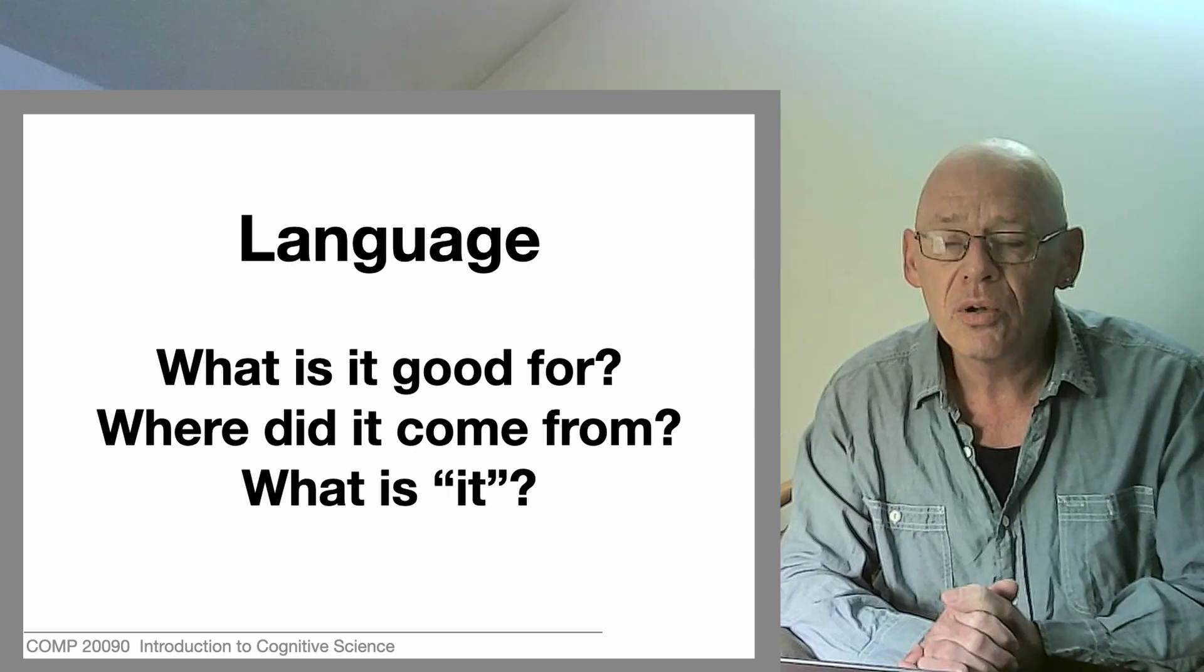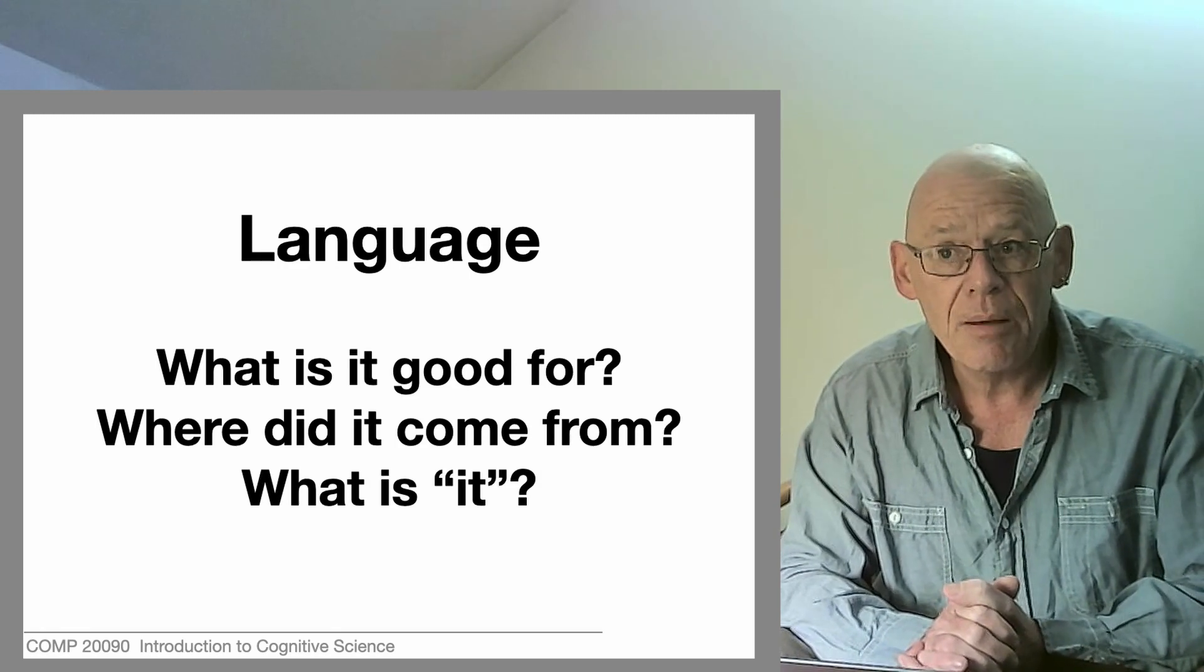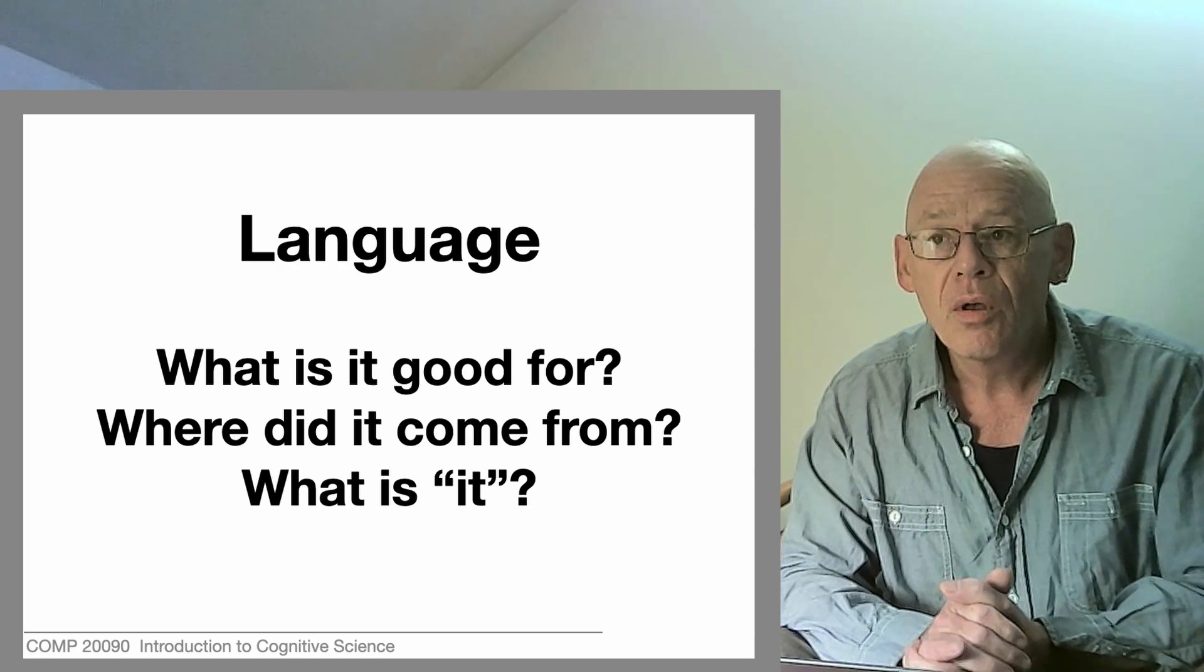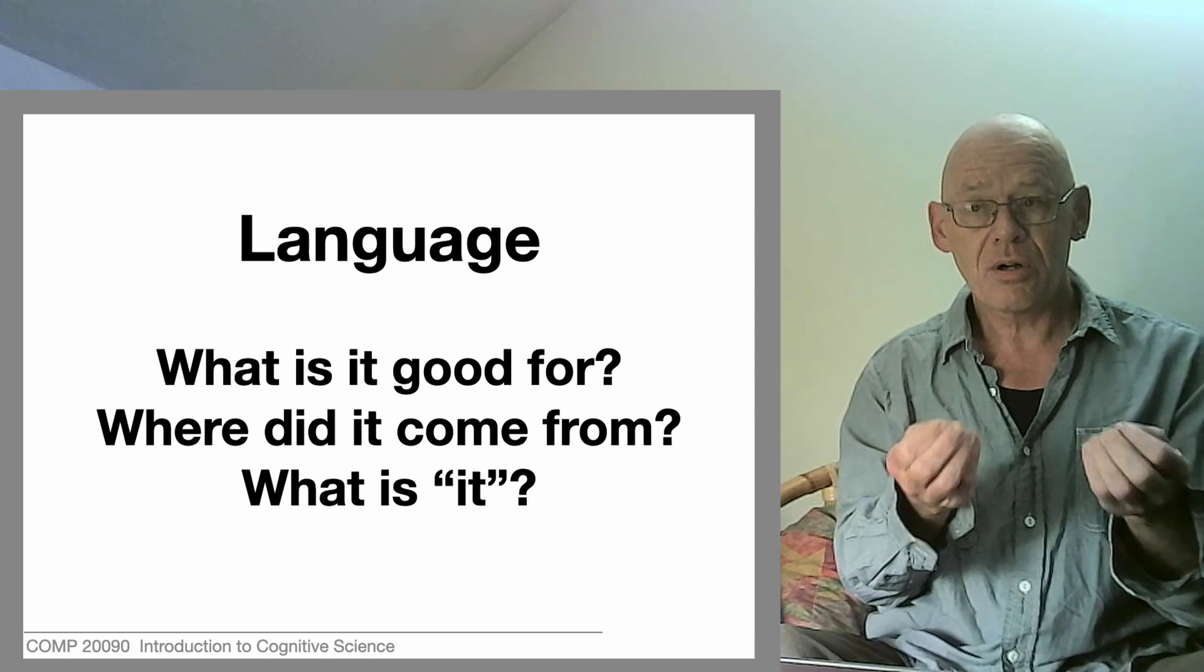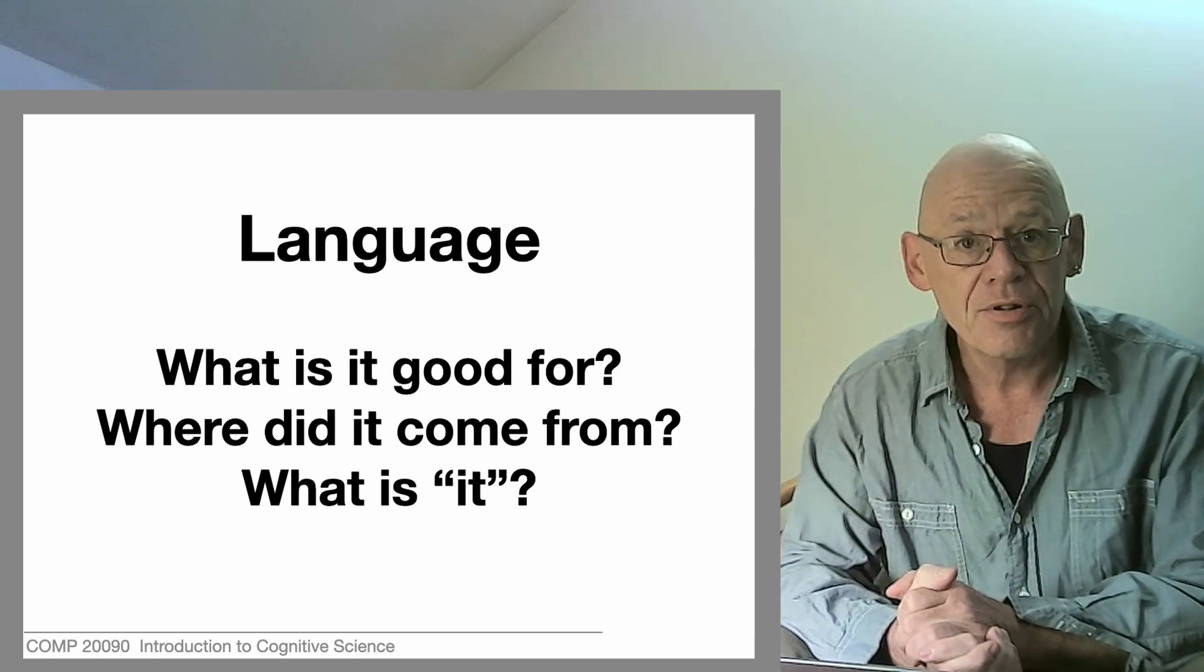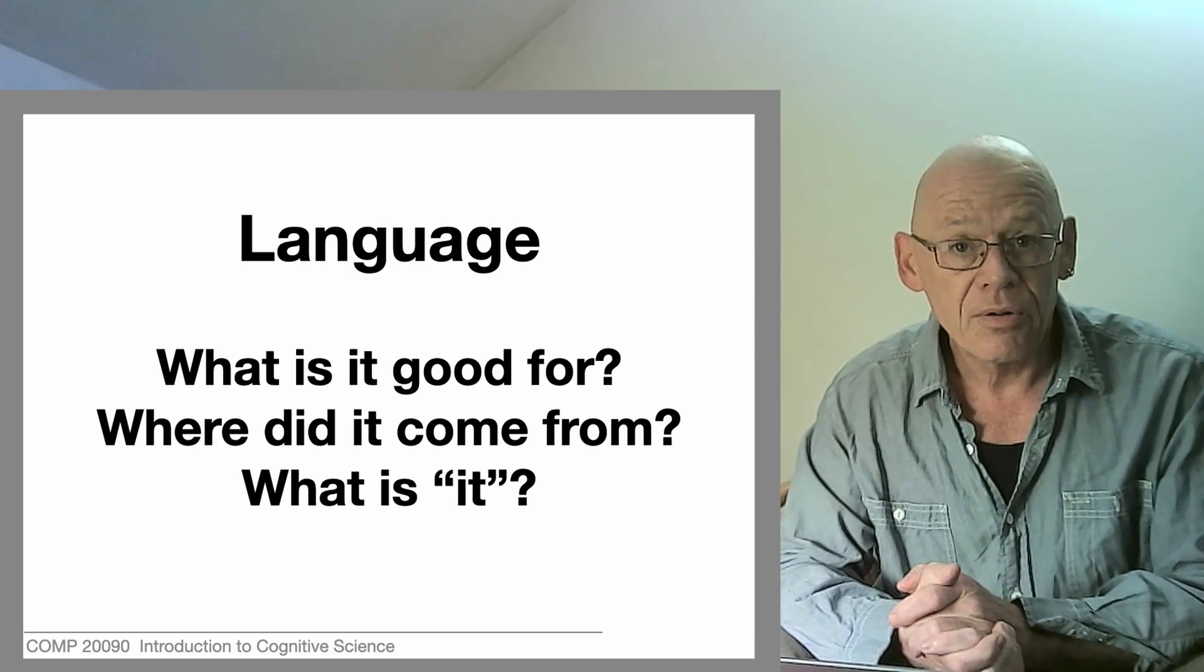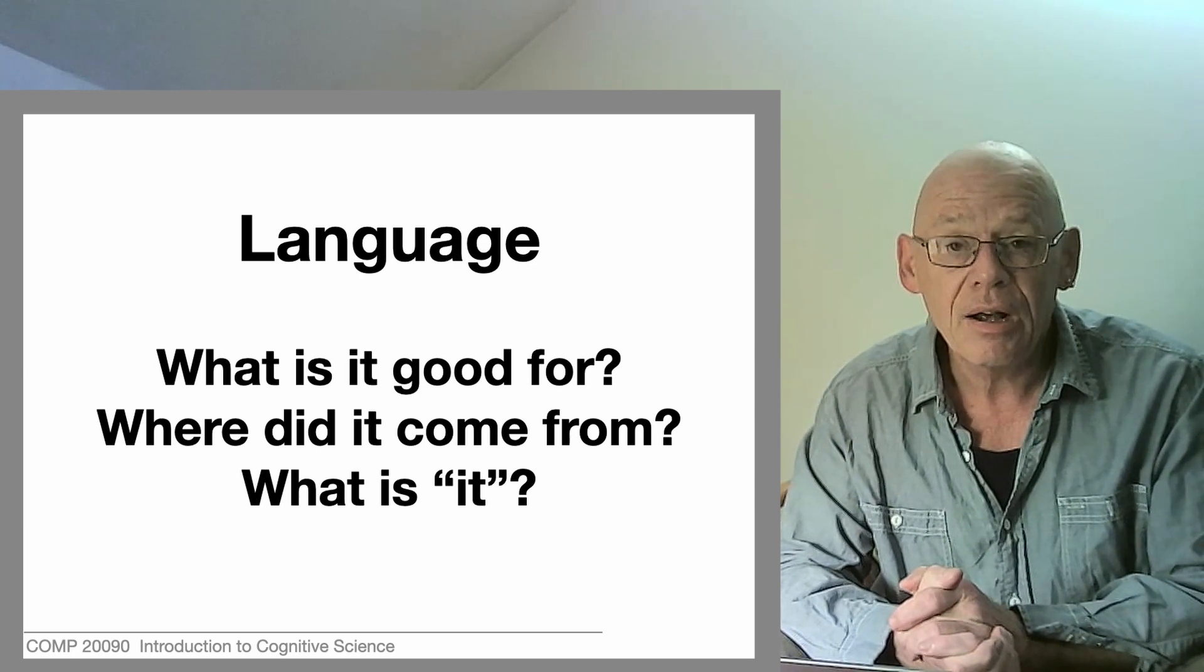Language has played a central role in the development of cognitive science since the Second World War, and theories of language became completely entangled with theories of mind in the revolution that happened after the Second World War once the computer metaphor came into being. Computers manipulate symbols according to rules. That's the basic way a computer operates. And theories of language which involved the arrangement and manipulation of symbols according to rules had been around already but became much more explicit in the second half of the 20th century.